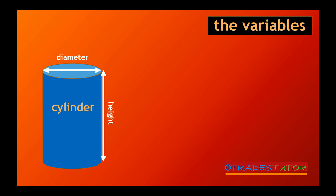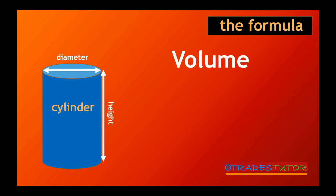So we have the two variables. What we need next is a formula, and it is volume is diameter squared times 0.7854 times height.